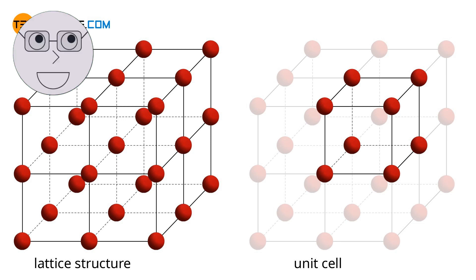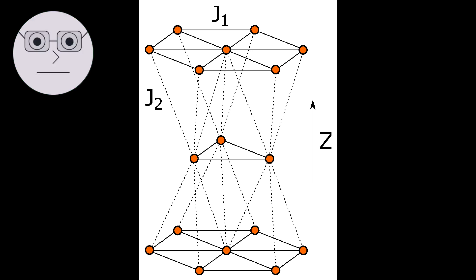Lattices and orderings have many applications in mathematics and computer science. For example, they are used in the study of abstract algebra, formal language theory, and database theory. In the next segment, we will explore some examples of lattices and orderings and how they are used in practice.